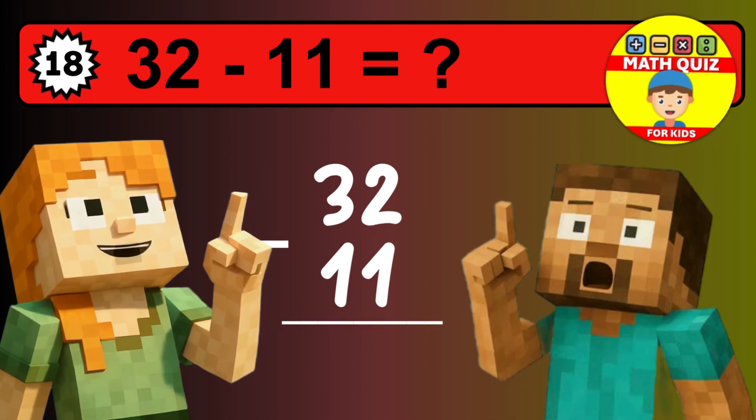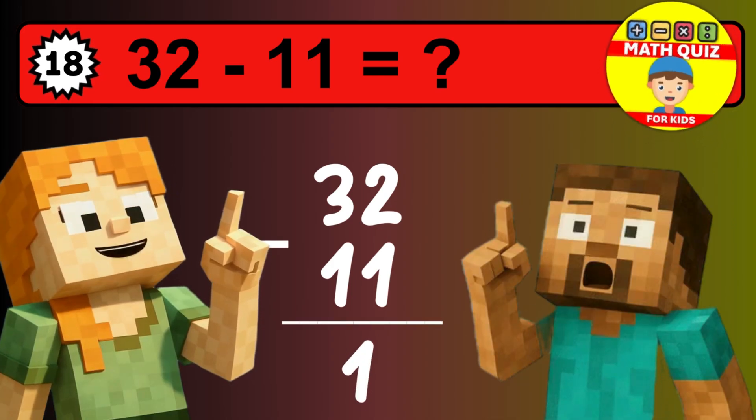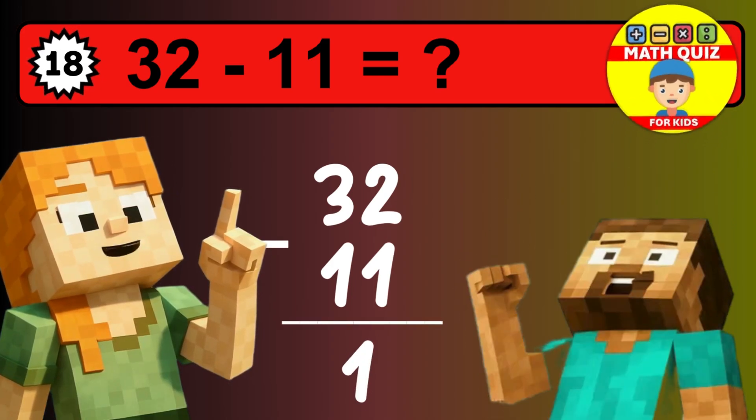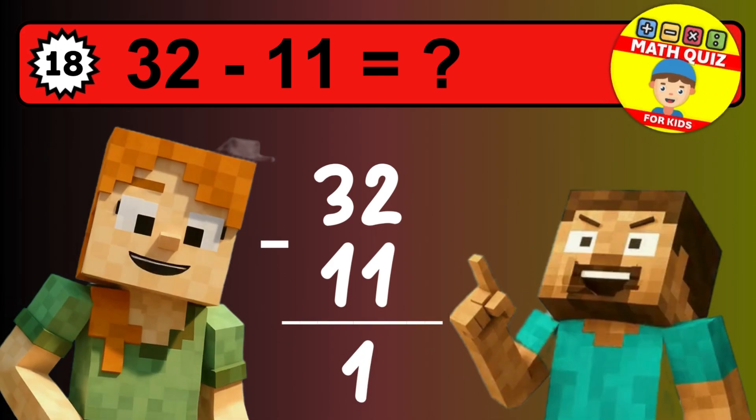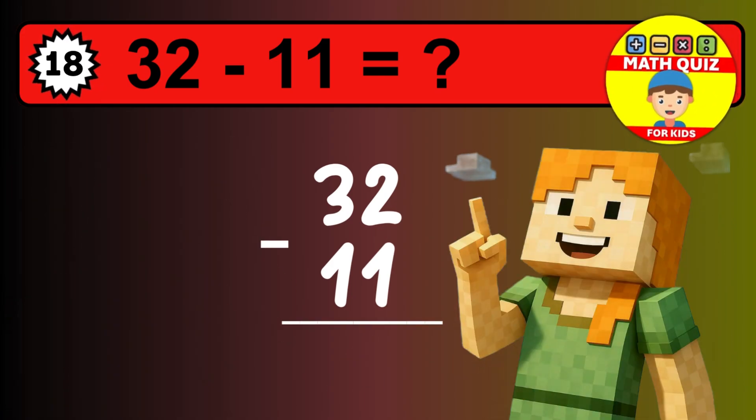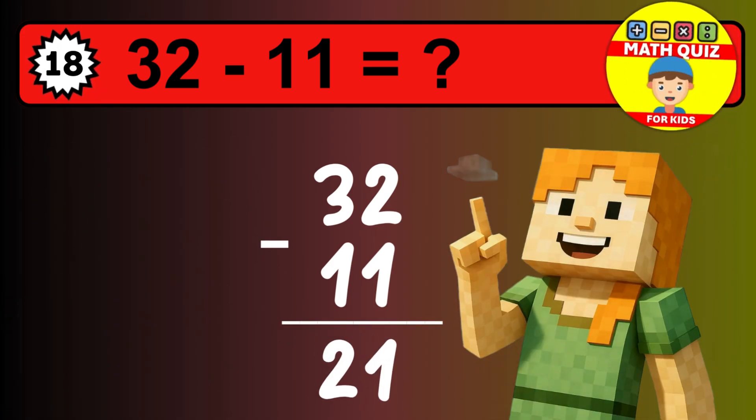We start with the units: 2 minus 1 is 1. Then we go to the tens: 3 minus 1 is 2. The final answer is 21.